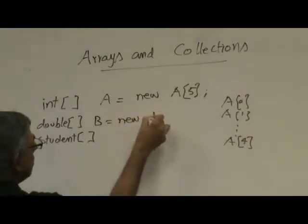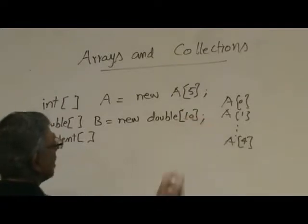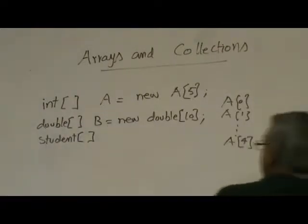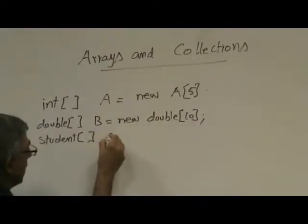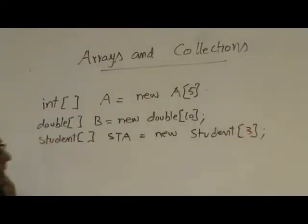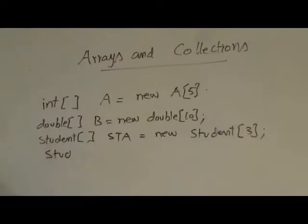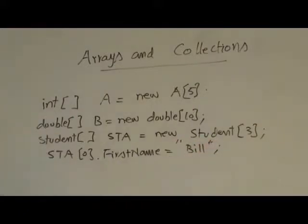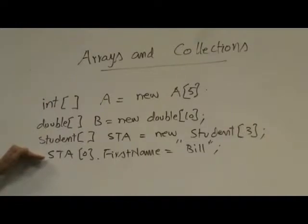Similarly, you could create an array of doubles of size 10. Now what if you wanted to create an array of, let's say, 3 students? So: STA = new Student[3]. Does this give us real memory for storing 3 students? No. What will happen if you try to do something like STA[0].firstName = "Bill"? Will the compiler allow this? Yes, the compiler will allow it, because this is an array of students. But what will happen if you try to run it?